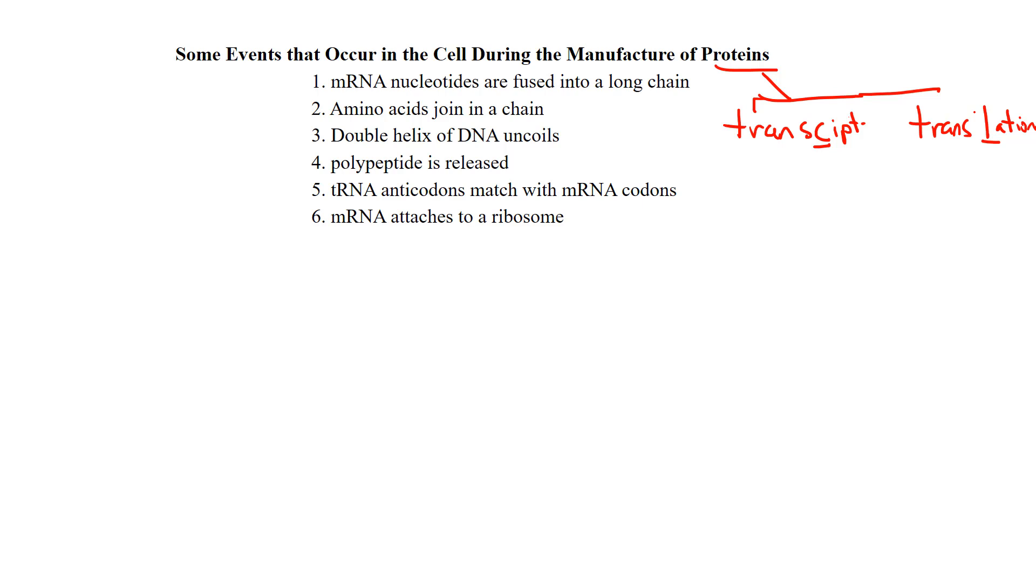Or they'll give you questions on where does transcription, where does translation, which one comes first, where do they occur? Transcription, of course, occurs in the nucleus. And the whole job of transcription is to make messenger RNA using one of the DNA strands as a template. So that occurs in the nucleus and translation occurs in the cytoplasm. That's where we're actually taking amino acids and putting them in the correct order to build the protein.